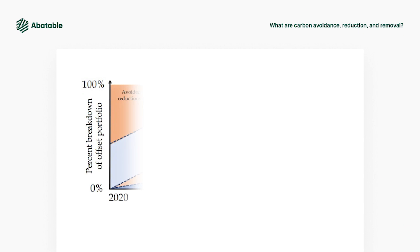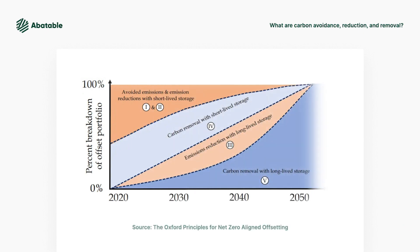We need to continue support for removal offset projects while protecting existing carbon sinks through avoided emission carbon offset projects. The Oxford Principles for net zero aligned offsetting illustrate this point well: removals will be required at scale in the near future, but avoidance is urgent today.